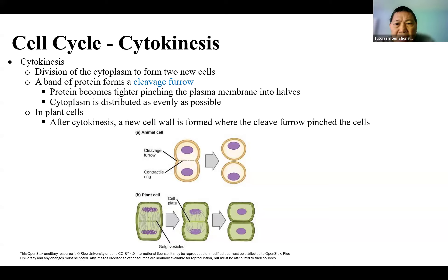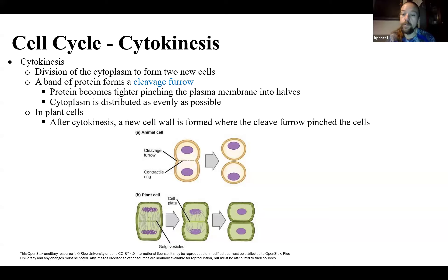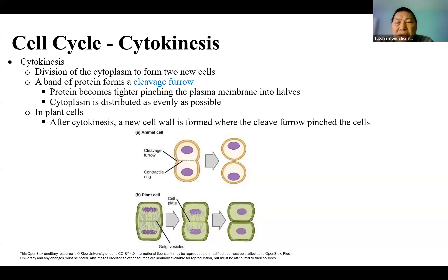Why do cells need to split? There are two reasons. One is to grow — we start as babies and get bigger by making new cells through mitosis. And once we reach a certain size and stop growing, we have to repair our old dead cells. We lose skin, we lose hair — if we didn't have this process to make new cells, they wouldn't grow back.